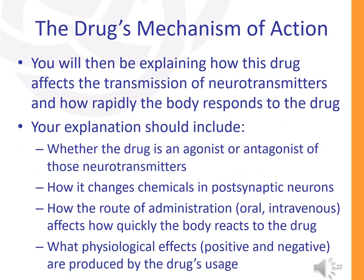Next, you will be looking at the drug's mechanism of action. You will be explaining how this drug affects the transmission of neurotransmitters at the synaptic level, as well as how rapidly the body responds to the drug. You should indicate whether the drug is an agonist or antagonist of those neurotransmitters, how it changes chemicals in postsynaptic neurons, how the route of administration — for instance oral, intravenous, or intramuscular — affects how quickly the body reacts to the drug, and finally what physiological effects, both positive and negative, are produced by the drug's usage.